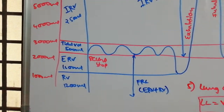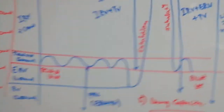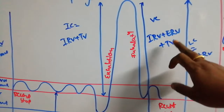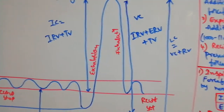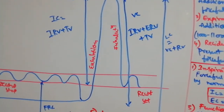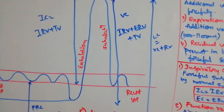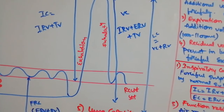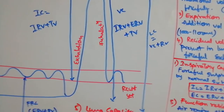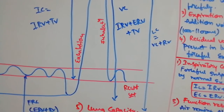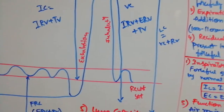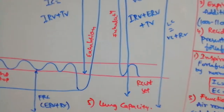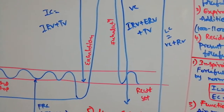Next is Vital Capacity (VC). Vital capacity is the maximum air breathed by forceful inhalation and exhalation during normal breath. It is considered as the maximum forceful exhalation followed by the maximum inhalation — this total is the vital capacity.